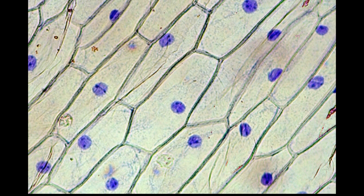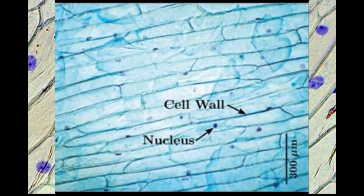If you repeat this experiment with the peel of onions of different sizes, what do you think your observation would be? For example, take a small onion, cut it, take the peel, and observe under the microscope — all the cells would look similar.